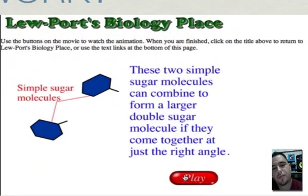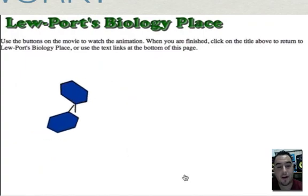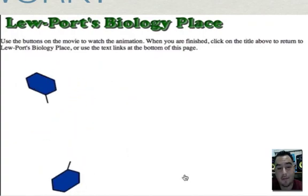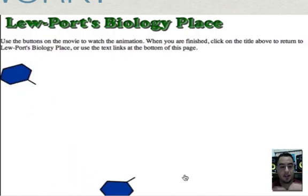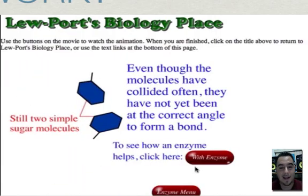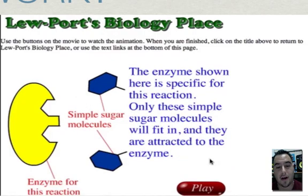These two simple sugar molecules can combine to form a large double sugar molecule if they come at the right angle. They have to match and proceed and approach at the right angle. That's going to take forever. They've collided, but they have not yet been at the correct angle to form the bond.